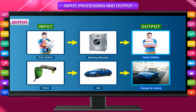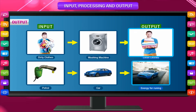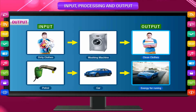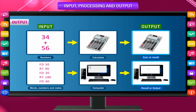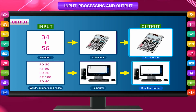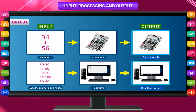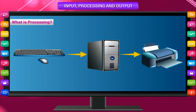Input: Dirty clothes → Washing machine → Output: Clean clothes. Input: Petrol → Car → Output: Energy for running. Input: Numbers → Calculator → Output: Sum or result. Input: Words, numbers, and codes → Computer → Output: Result or output.